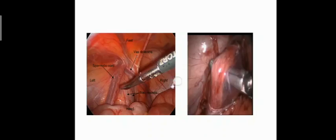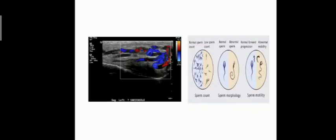Investigations of varicocele: duplex ultrasound shows the blue color indicating high venous flow inside the dilated veins, which is the characteristic finding of varicocele. Semen analysis concentrates on sperm count, sperm morphology, and sperm motility, all of which are affected in varicocele due to impairment of spermatogenesis. Abnormal counts, abnormal morphology, and abnormal motility are seen in cases of varicocele.